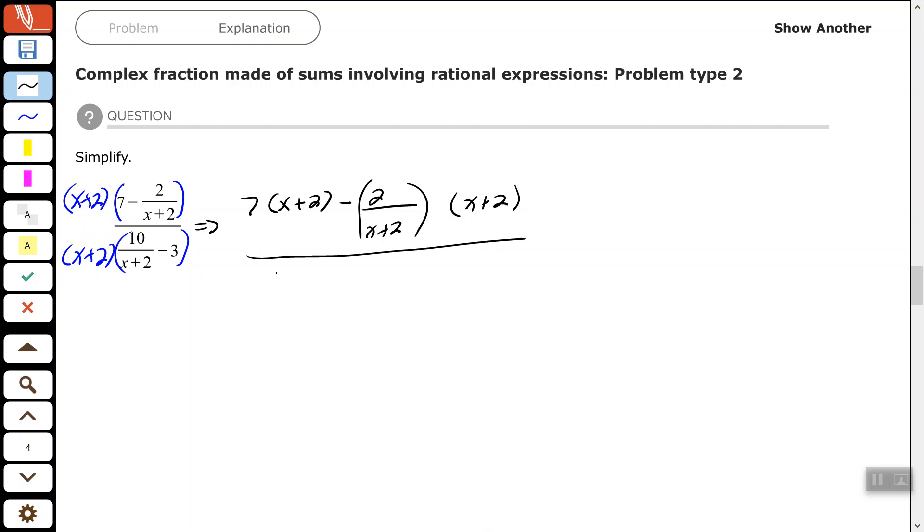All over, use distributed property in your denominator. So I'm multiplying everything by x plus 2, each one of those terms by x plus 2.